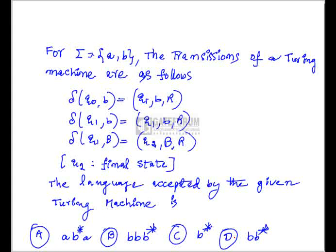For Σ = {A, B}, the transitions of a Turing machine are: δ(Q0, B) = (Q1, B, Right), δ(Q1, B) = (Q1, B, Right), δ(Q1, blank) = (Q2, blank, Right), where Q2 is the final state. The language accepted by the given Turing machine — the options are: A) AB*A, B) BB*B, C) B*, D) BB*.